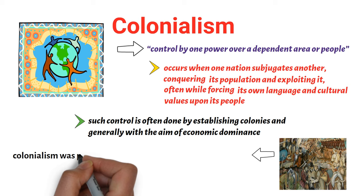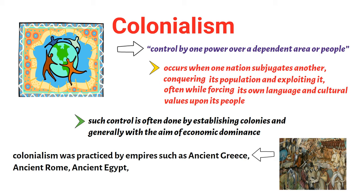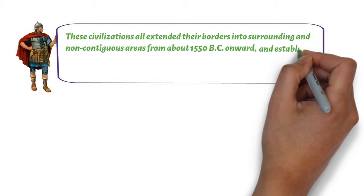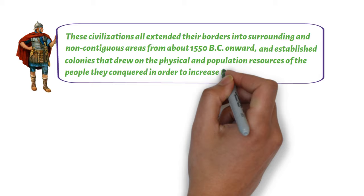In antiquity, colonialism was practiced by empires such as ancient Greece, ancient Rome, ancient Egypt, and Phoenicia. These civilizations all extended their borders into surrounding and non-contiguous areas from about 1550 BC onward and established colonies that drew on the physical and population resources of the people they conquered in order to increase their own power.